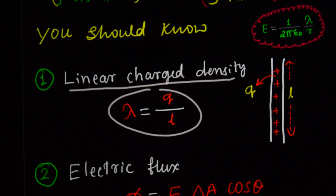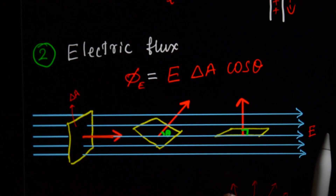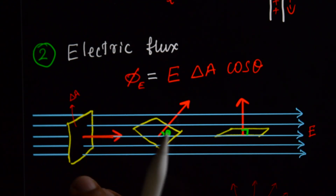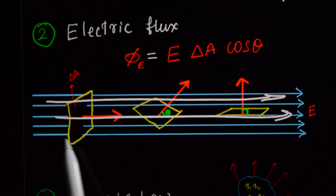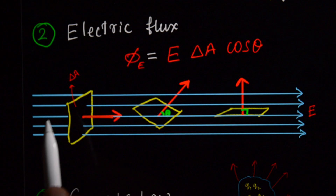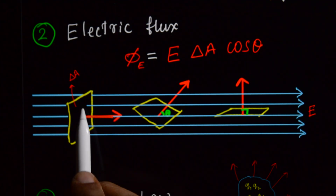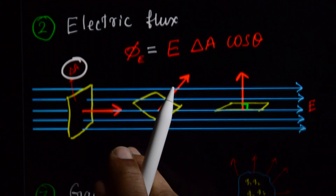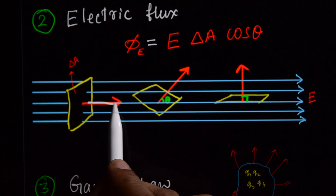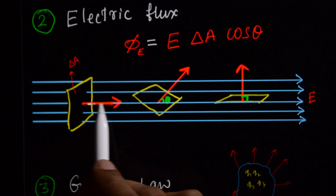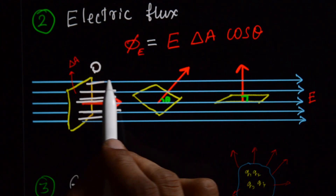We also need to know what electric flux is. Flux means something that is flowing out. Before discussing electric flux, let's use a simple water analogy. Imagine this is the flow of water. The direction of water flow and the area vector of the frame — what is the angle between them? Zero. That gives maximum water flow through the frame.